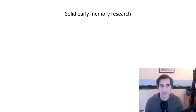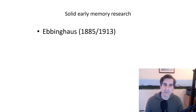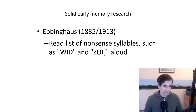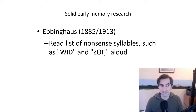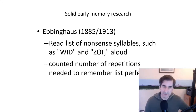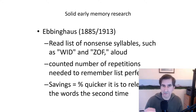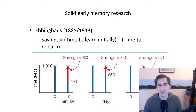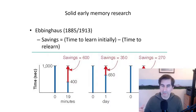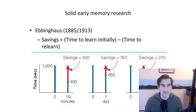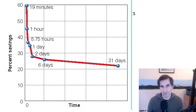Let's start out with some important early memory research by Ebbinghaus. In some of the earliest, well-controlled memory research, you get findings that last the test of time. He had nonsense syllables that he himself tried to memorize, counted the number of repetitions needed to remember the list perfectly, and then measured 'savings' — the percentage amount of time it was quicker to relearn the words the second time. The most important thing is to look at the shape of the graph of Ebbinghaus's results: it is a decay curve.